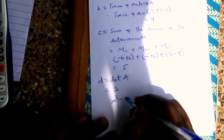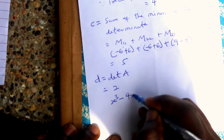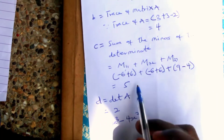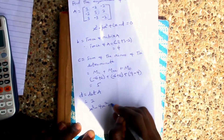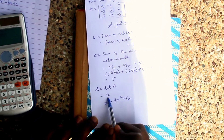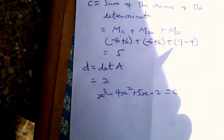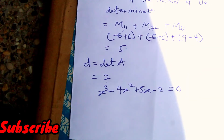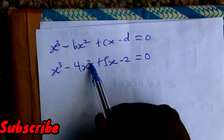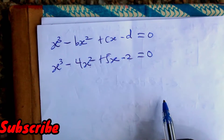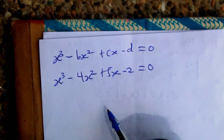So our final characteristic equation is: s cubed minus 4s squared plus 5s minus 2 equals zero, where b (the trace) is four, c (the sum of minor determinants) is five, and d (the determinant) is two. Now we use the calculator polynomial solver to find the values of s.